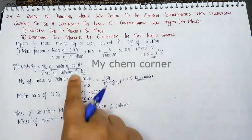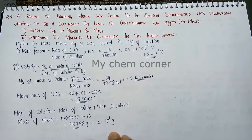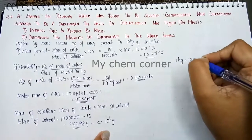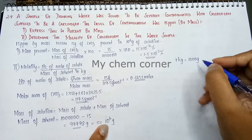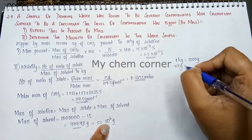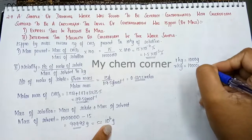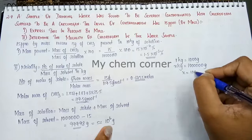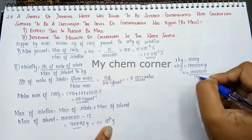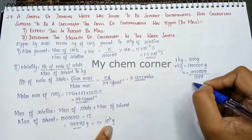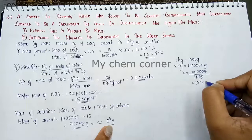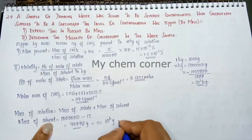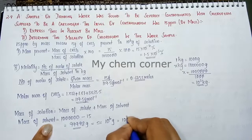We can't leave the mass in grams — we have to convert it to kg. The relation is: 1 kg = 1000 grams. So x kg = 10⁶ grams. Cross-multiplying: x = 10⁶ ÷ 1000 = 10³ kg. So the mass of the solvent is 10³ kg.